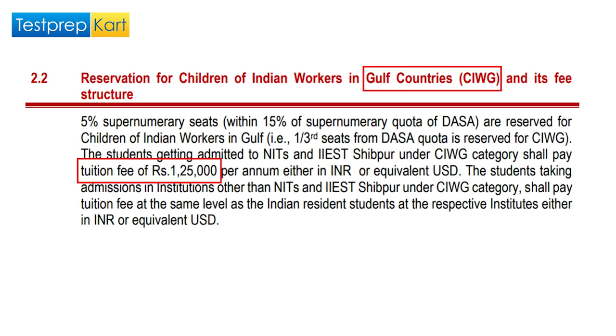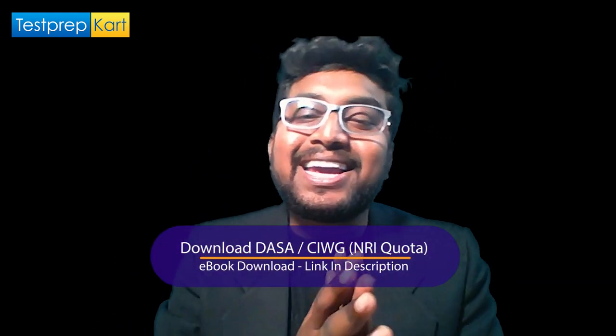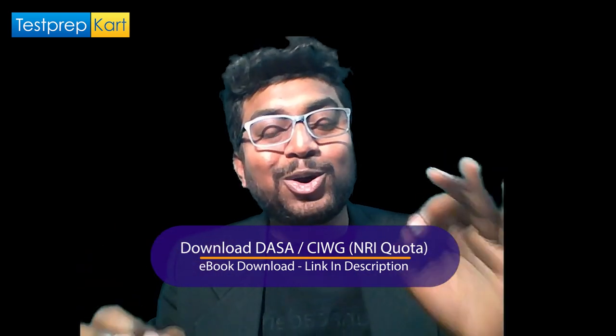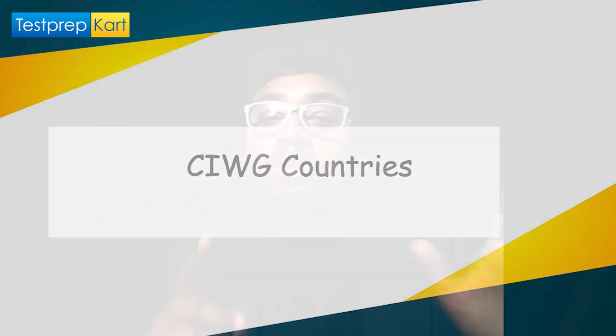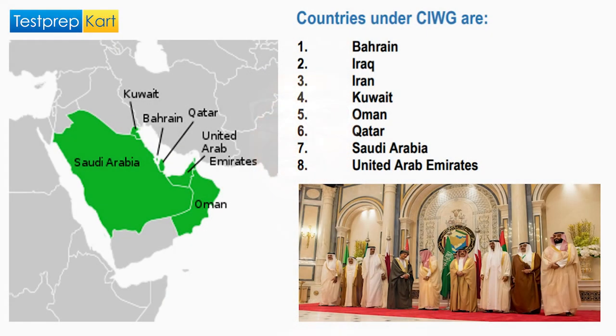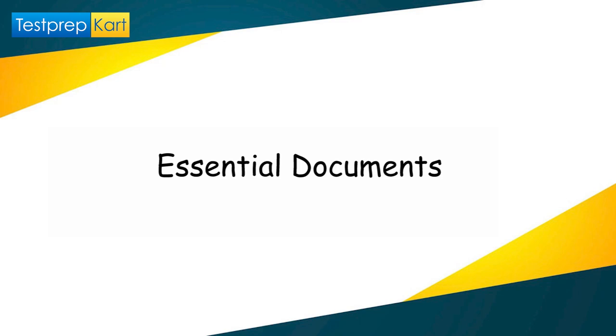An NRI eBook related to DASA and CIWG quota is available for download from the link in the description box. The CIWG countries include Bahrain, Iraq, Iran, Kuwait, Oman, Qatar, Saudi Arabia, and the United Arab Emirates (UAE).